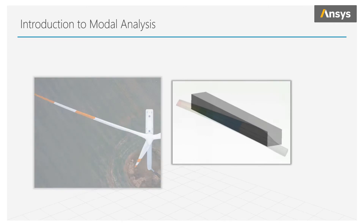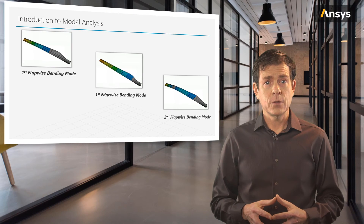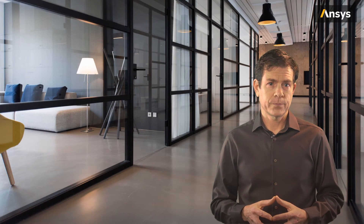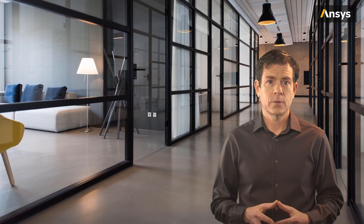Here we see the first or primary flapwise bending mode. Now we see the first edgewise bending mode, and here's the second flapwise bending mode. There are actually many more modes, but right now we're just looking at the first few. The dynamic response of the blade to the wind will be a combination of the natural frequencies with varying amounts of contribution from each of the modes, as in the random vibration simulation of the blade we briefly touched upon. We'll go more in depth on the topic of modal analysis in that lesson, as we'll explore more advanced topics in dynamics, such as our lessons on mode superposition and harmonic analysis.